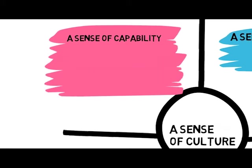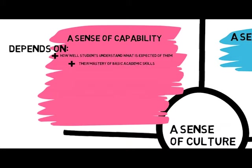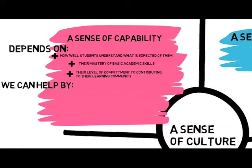Let's drop down into what a sense of capability might mean. I think fundamentally, if we help students understand what is expected of them and help them master the basic academic skills that they're required — both in terms of the content and in the process — and help them have a sense of efficacy in committing to a learning community, then we're helping students develop a sense of capability. Practically speaking, it's really about setting up learning environments where we clarify and negotiate what we expect of each other and provide them with a scaffolded sense of skills that help them move forward.